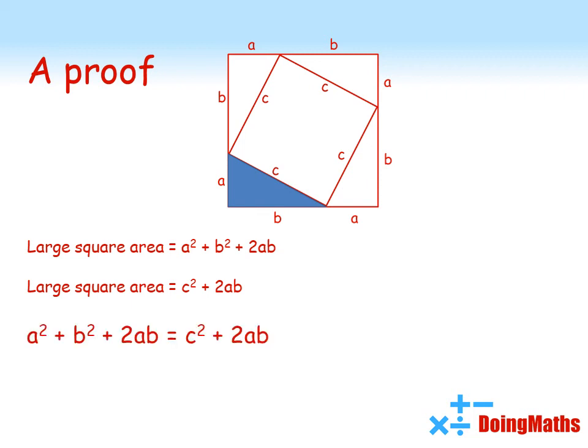We can see that there's 2ab on both sides. So let's cancel that off, which leaves us with a squared plus b squared equals c squared.